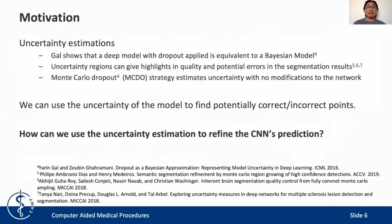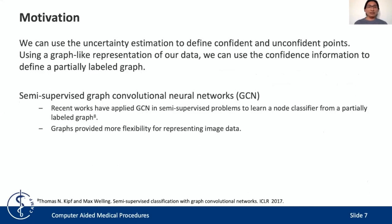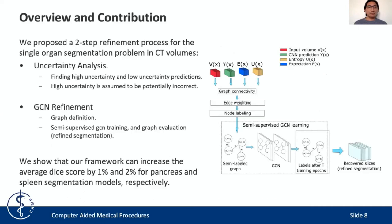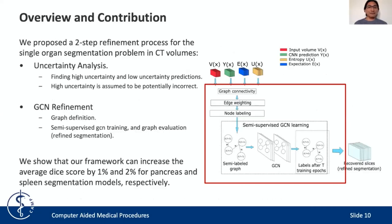Monte Carlo Dropout has shown utility for estimating the quality of the segmentation of a model, and also to highlight potential errors in the segmentation. Now that we can use the uncertainty to estimate potential errors, the next question is how to include this information in the refinement pipeline. For this, we model the refinement problem as a graph convolutional learning problem. We construct a partial label graph using the uncertainty information, then use the high certainty elements of this graph to train a GCN — a graph convolutional neural network — and finally use this GCN to refine the segmentation. In general, we propose a two-step refinement process for single-organ segmentation in CT volumes.